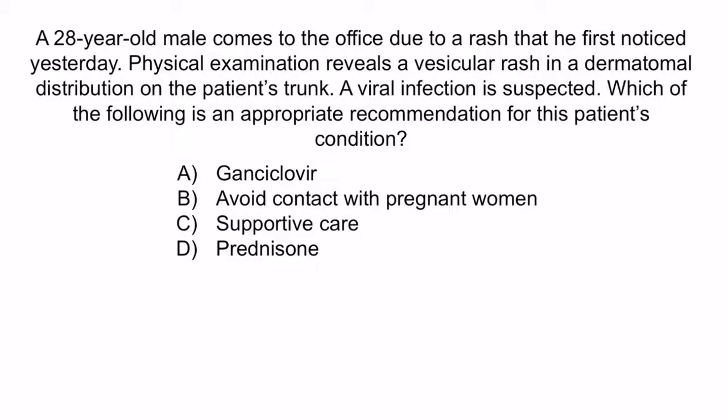Now let's review with a question. A 28-year-old male comes to the office due to a rash that he first noticed yesterday. Physical examination reveals a vesicular rash in a dermatomal distribution on the patient's trunk. A viral infection is suspected. Which of the following is an appropriate recommendation for this patient's condition? A. Ganciclovir  B. Avoid contact with pregnant women  C. Supportive care  D. Prednisone. Hopefully from the question stem you noticed that this patient had a vesicular rash in a dermatomal distribution — a classic description of shingles.